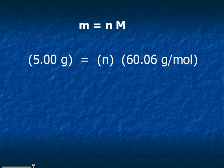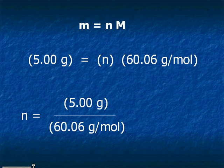We can solve for the number of moles n, which is equal to 5.00 grams divided by 60.06 grams per mole. The number of moles is equal to 0.0833 moles.